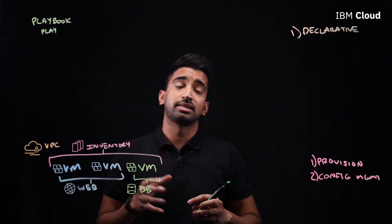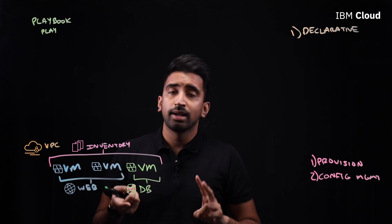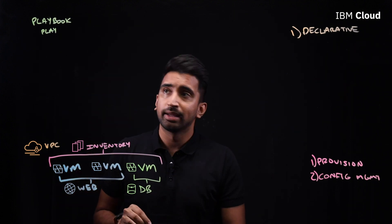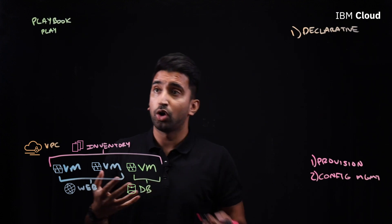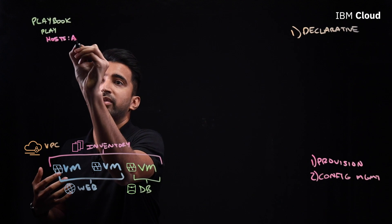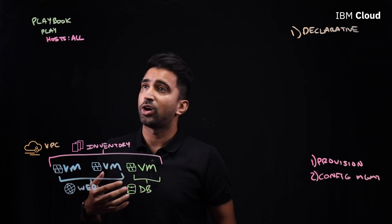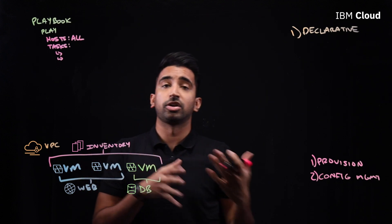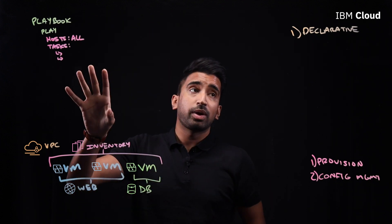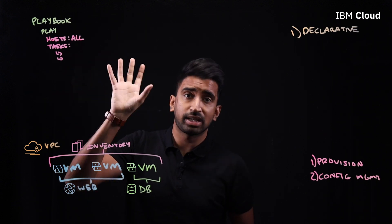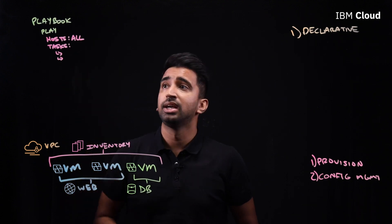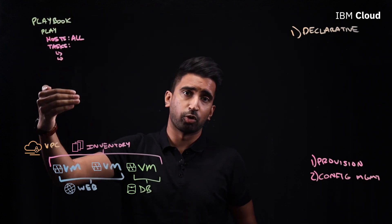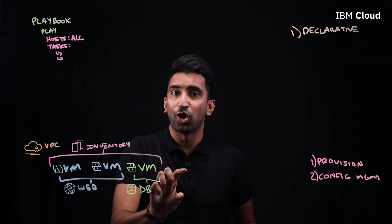A play consists of three main things: a name, the hosts it's going to run against, and the actual tasks it will run. In this particular play, the host is set to 'all' because we want to run against all hosts, and the tasks will include things like security patching. Ansible takes advantage of YAML for its declarative nature — so in the real world this would be in YAML format.